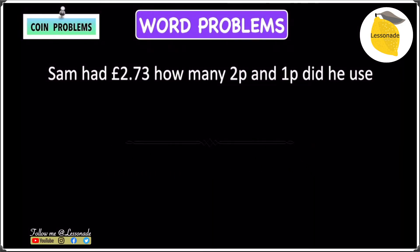Now, let's have a look at a coin word problem. The question we have is Sam had £2.73. How many 2p and 1p did he use?